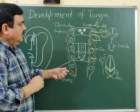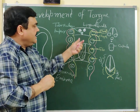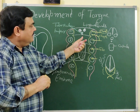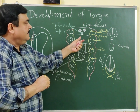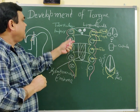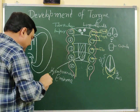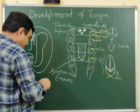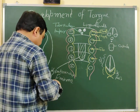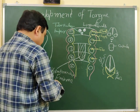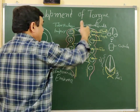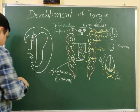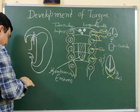So you can easily explain the nerve supply on the basis of development. If you see in the sagittal plane, you will find the anterior part, with the second arch, third arch, and fourth arch arranged posteriorly.